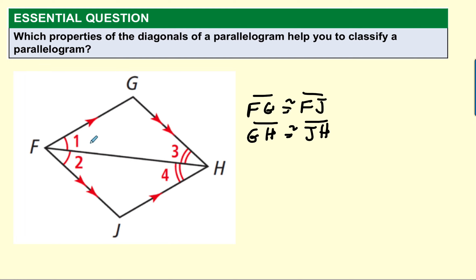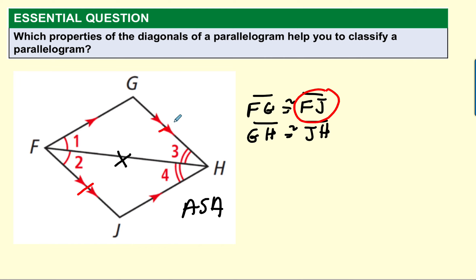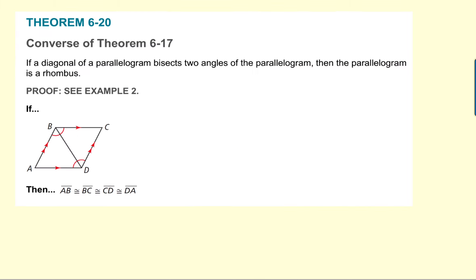Now let's take a look at this situation. Notice that this diagonal is bisecting this angle and bisecting this angle. So these two triangles are going to be congruent by angle-side-angle, using the reflexive side. Once they're congruent, we can say FG is congruent to FG by rigid motion, and GH is congruent to JH. Since this is a parallelogram, opposite sides are congruent, so FJ is congruent to GH. That forces everything to be congruent, and if all the sides are congruent, it ends up being a rhombus. Theorem: if the diagonal of a parallelogram bisects the two angles of the parallelogram, then the parallelogram is a rhombus.